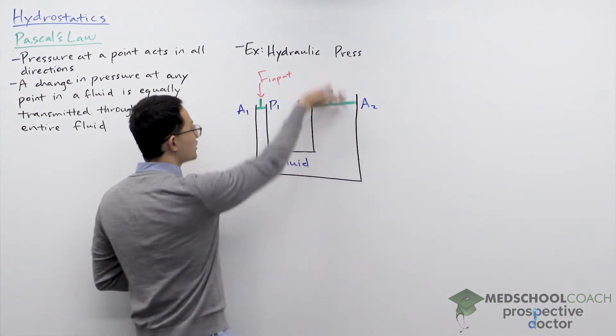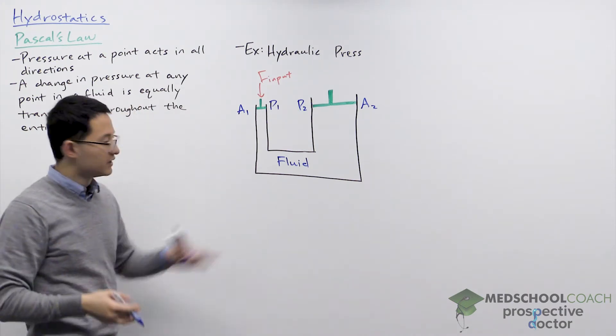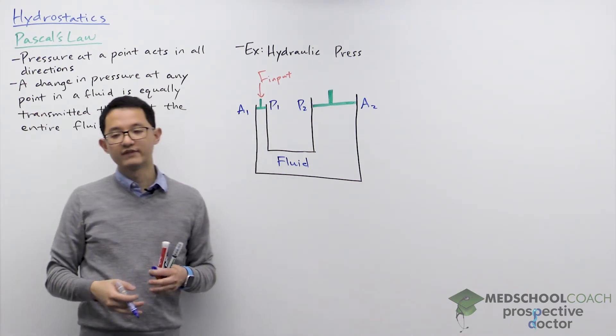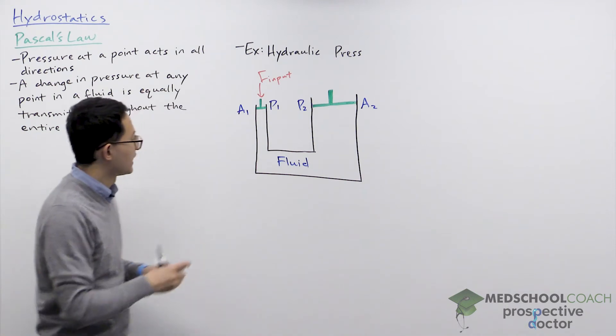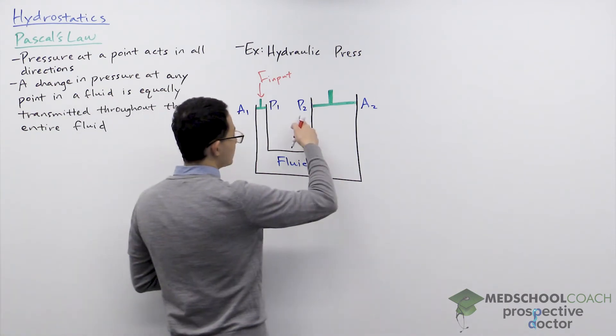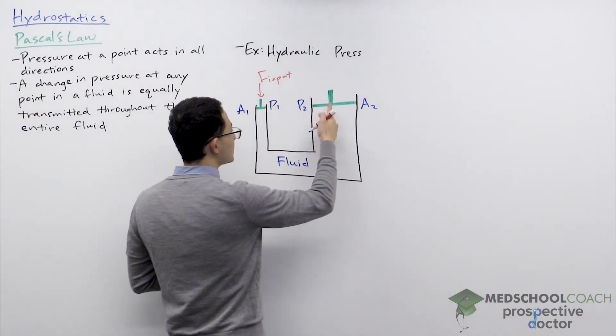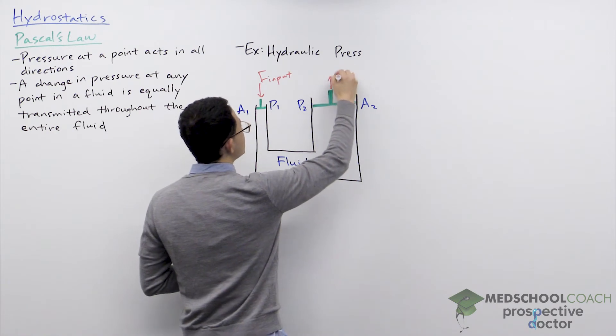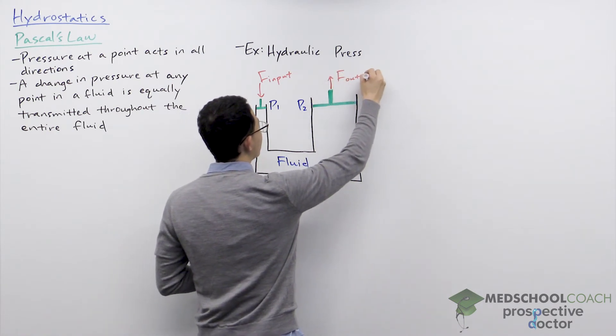But the difference between the pressure at point one and point two is when you push down on this piston, it is pushing the larger piston up. So this could be very helpful for lifting large and heavy objects. And of course if you're generating a pressure up on this piston, then you're going to get some sort of an output force.